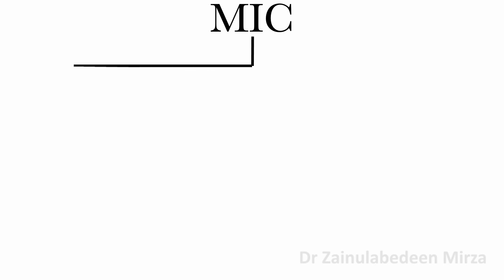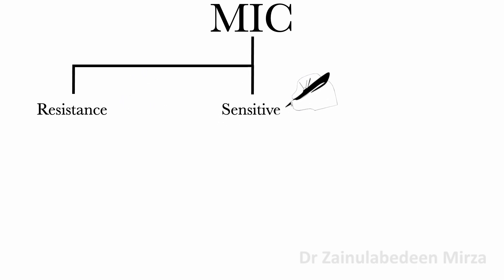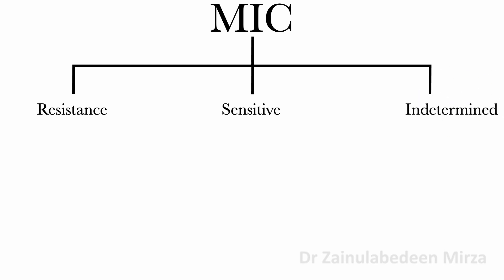The MIC tests divide bacteria into susceptibility categories: resistance, sensitive, and indeterminate. These tests are used to determine if an agent will be effective or not against specific organisms. Both antibiotic concentration and MIC are essential in determining drug doses.